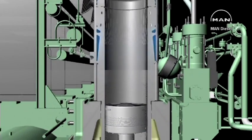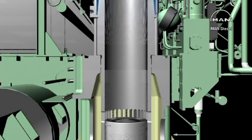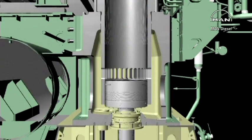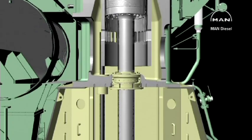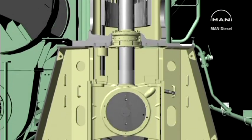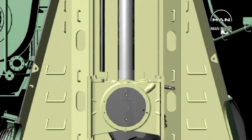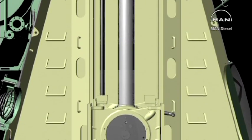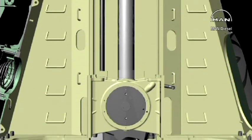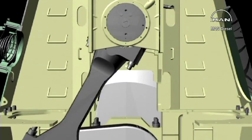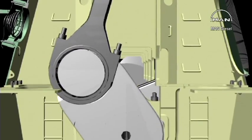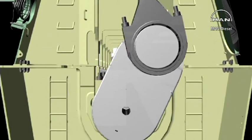This reveals the moveable parts: pistons, piston rods, crossheads, and connecting rod and crankshaft.